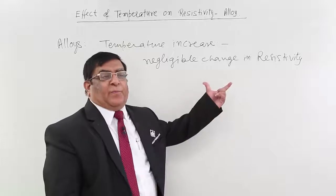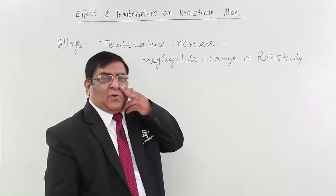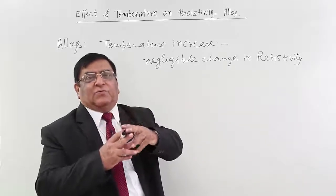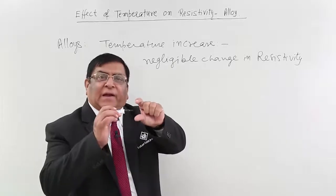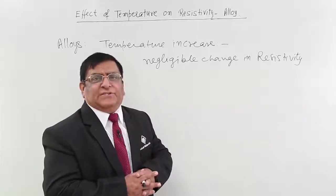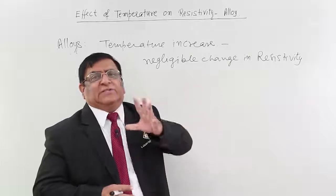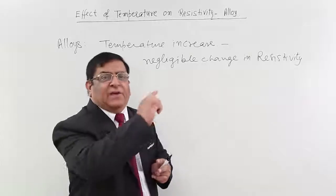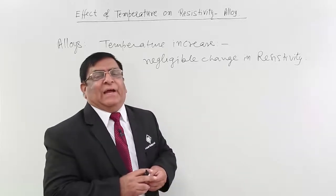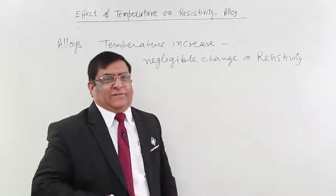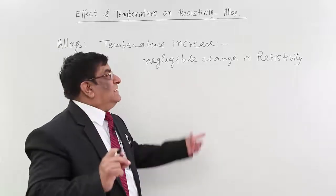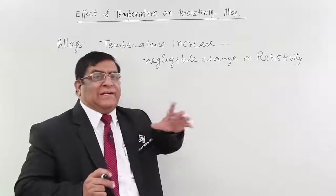You will ask why this property exists. It is because of the combination of the two metals — when one is not able to provide a conduction path, the other metal provides it. Due to this strange configuration of atoms, the drift velocity does not change much and finds a way to maintain itself, so there is not much change in current and resistance.